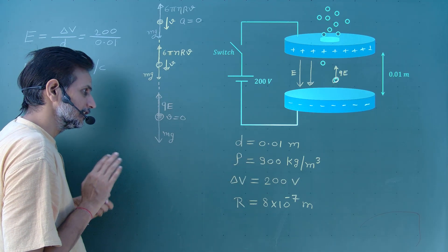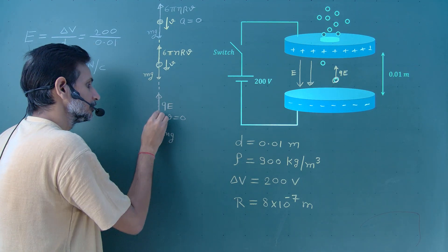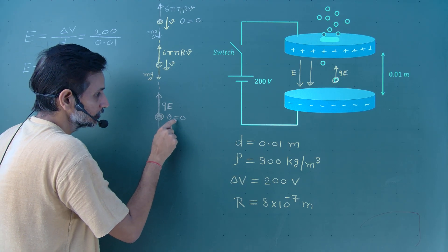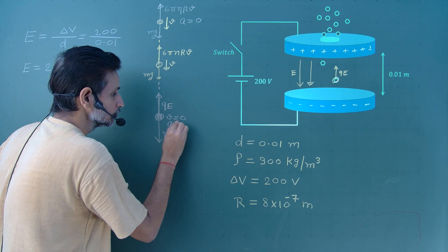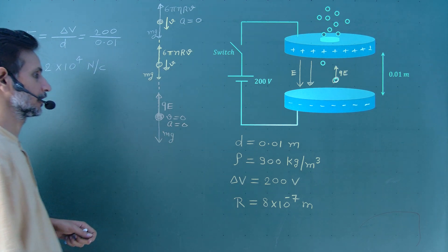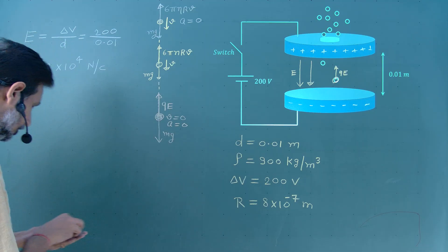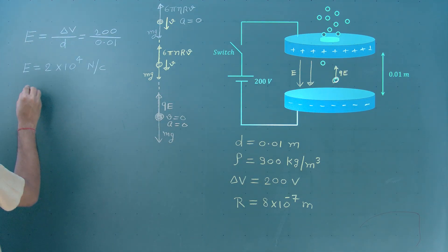Now, in question, it is given that this particle floats. This particle will float only when at this situation, V equal to 0 and A also should be 0. It means the total force in upward direction and downward direction must be equal. So, we got a condition that for floating at rest, QE equal to Mg. From quantization of charge, Q should be equal to N into e equal to M into G.